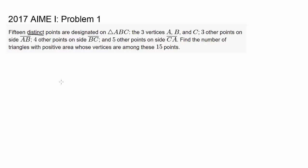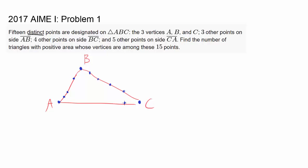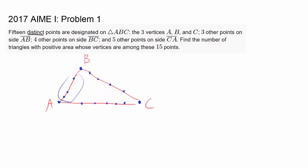Those three vertices A, B, C — it may be beneficial to draw this out. So we have triangle ABC with three vertices. There are 3 other points on side AB, 4 other points on side BC, and 5 other points on side CA. So we have 3 vertices plus 3 plus 4 plus 5, which is indeed 15 distinct points.